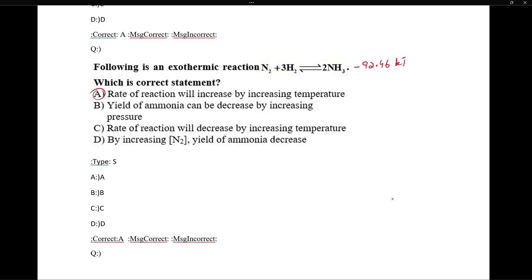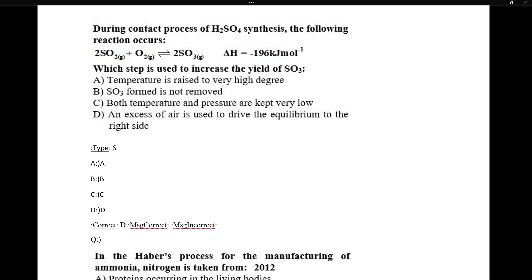With increasing temperature, the rate of reaction always increases. One other thing is equilibrium - it is a different thing, but with temperature increase, the rate of reaction increases every time. During contact process of H2SO4 synthesis, it is an exothermic reaction. Which step is used to increase the yield of SO3? Temperature is raised to very high? Absolutely not. Because it's exothermic reaction, so temperature must be decreased. Temperature increase means reaction will move in backward direction and yield will decrease.